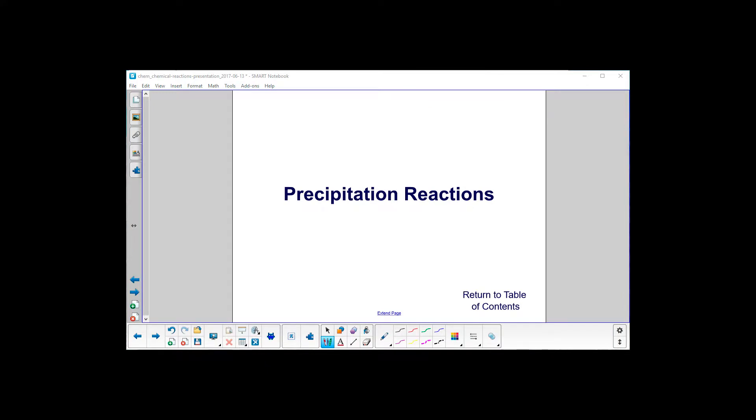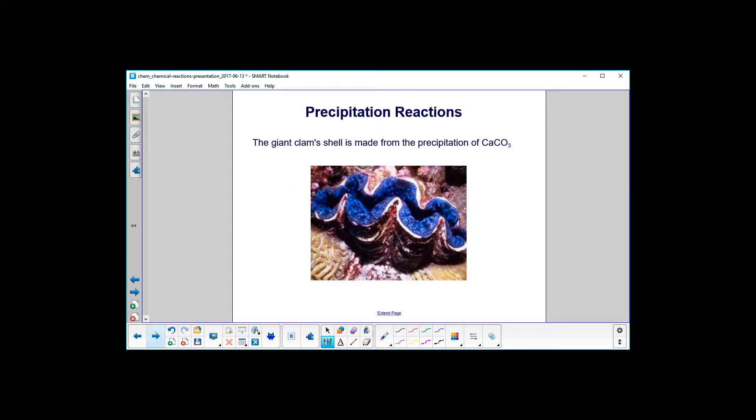We'll focus first on precipitation reactions. Here's an example. This is a giant clam here, see the blue and the gray and all that stuff. That clam shell is made from the precipitation of calcium carbonate.